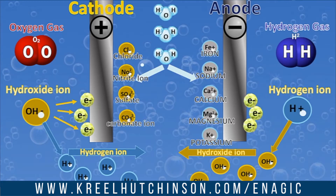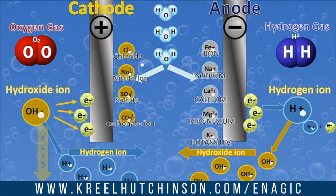We want electrons — we want lots of them — because we're being bombarded by free radicals. So when we add the hydrogen ion and the electron, this becomes a massive, massive antioxidant. This is our electrolyzed reduced water, and this is where a lot of lives end up getting changed.